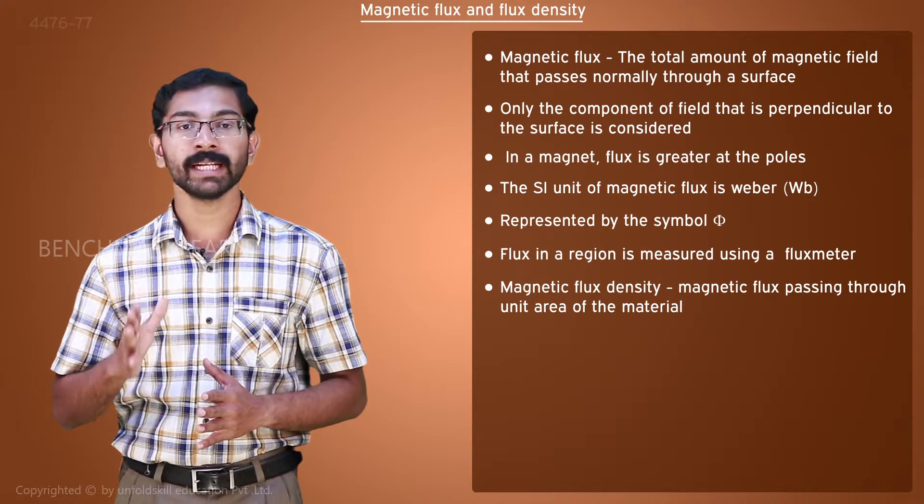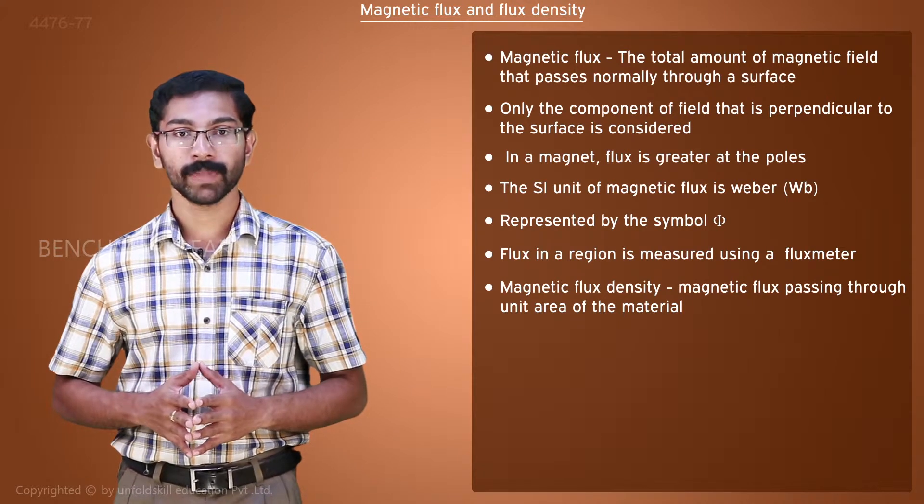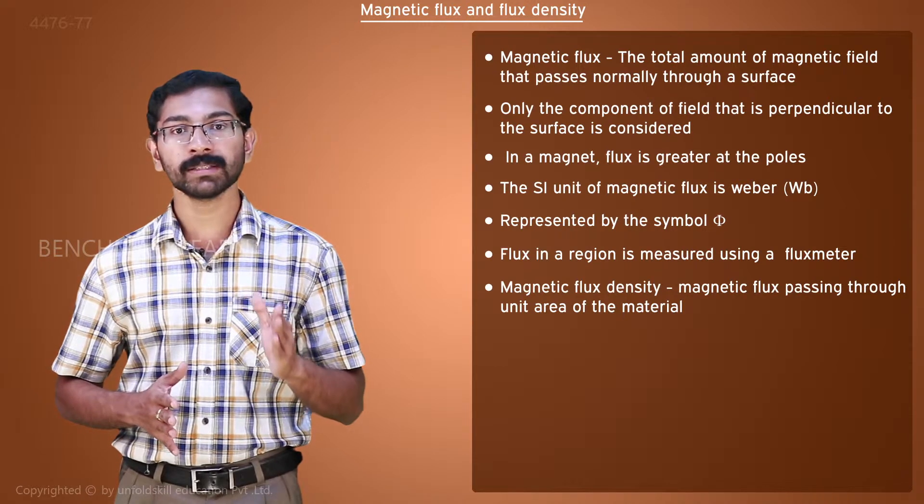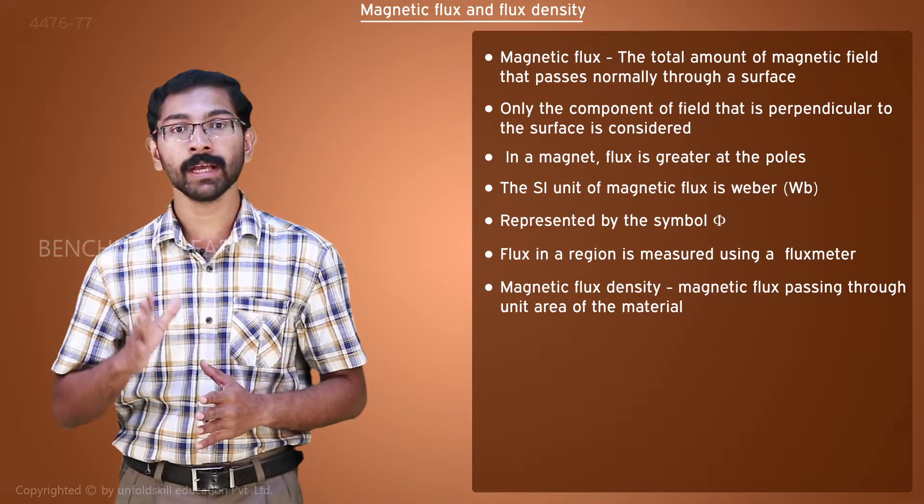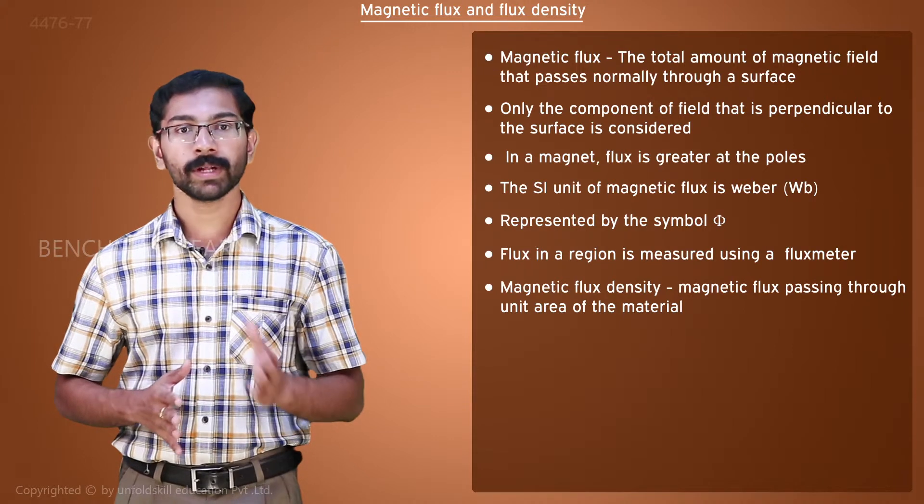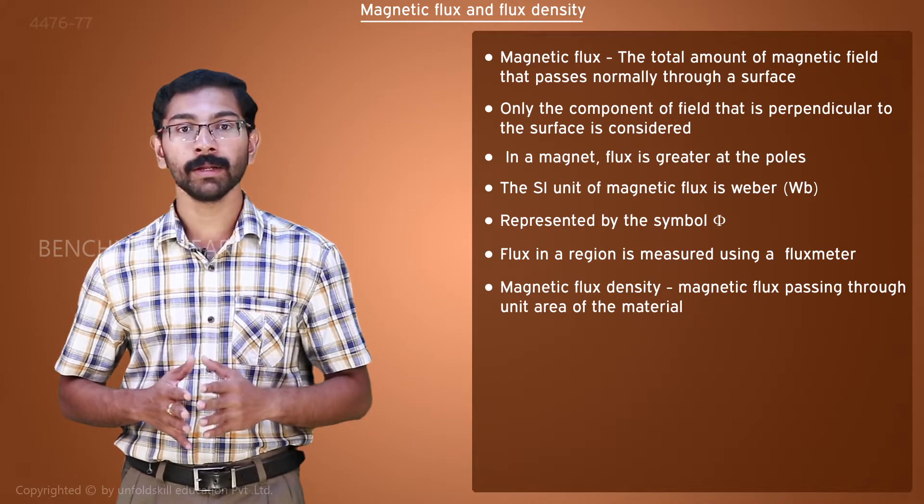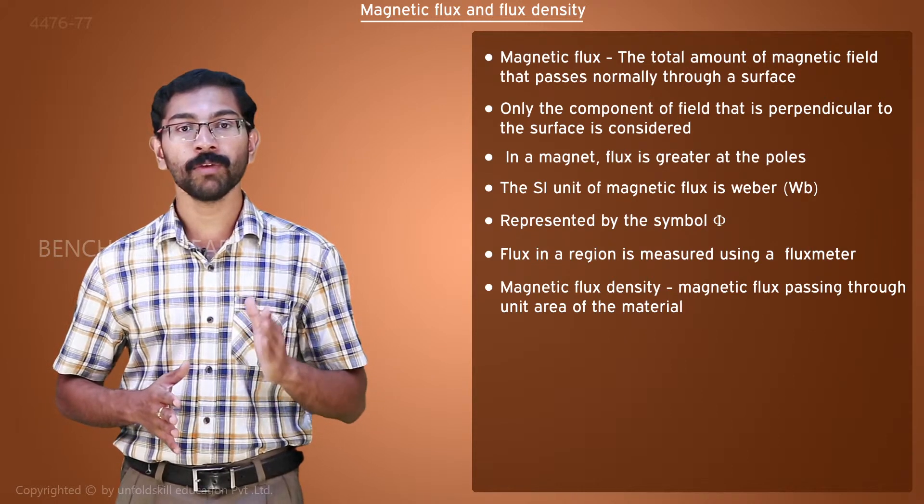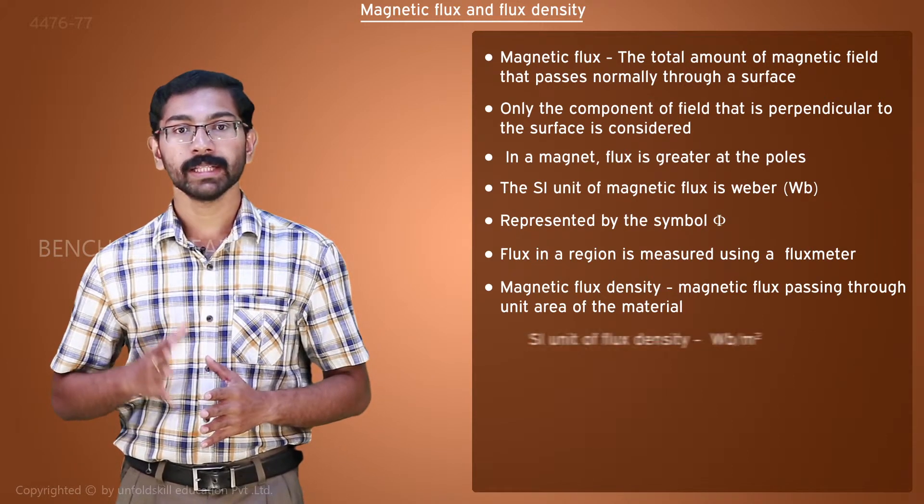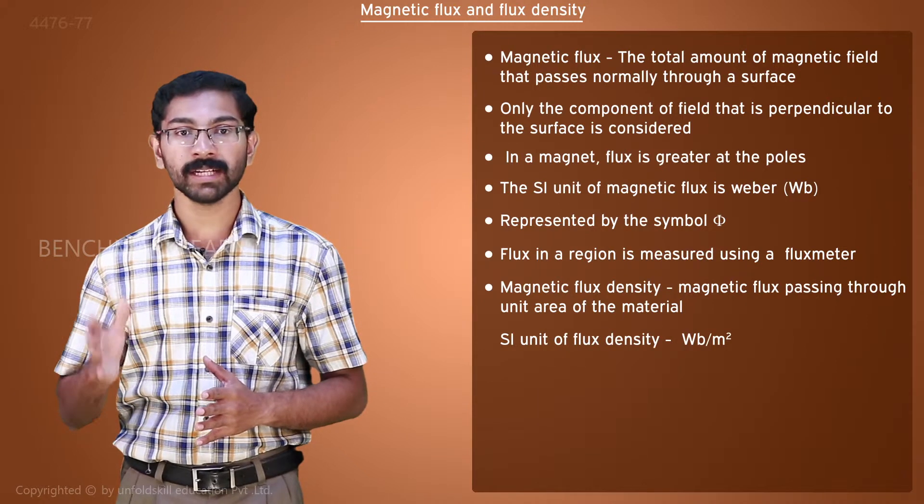We call that magnetic flux density. The maximum magnetic flux density of a material is a constant. For example, the maximum flux density allowable for steel used in transformers is 1.5 tesla.